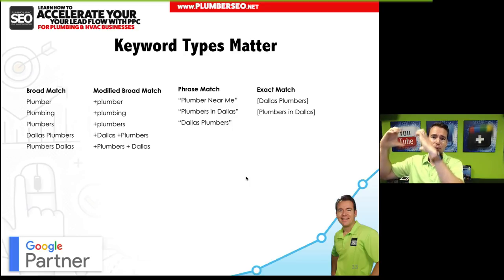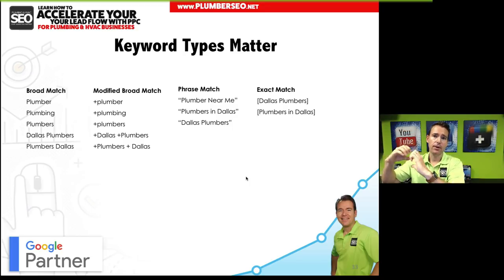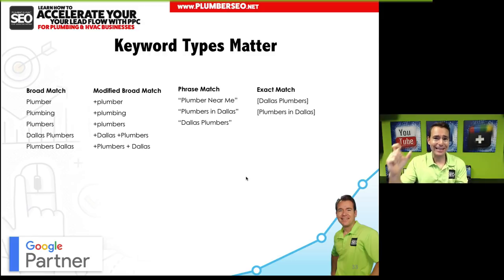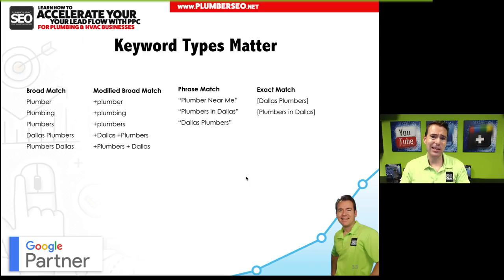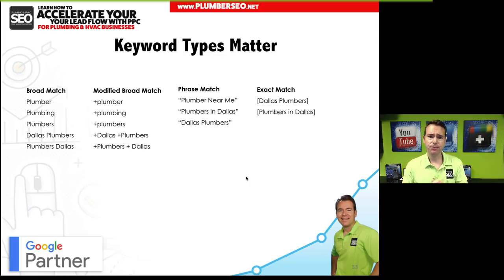If you're too restrictive — like only using exact match brackets for 'Dallas plumber' — you could miss out on a lot of keywords. You want a blend of phrase match and exact match with some modified broad match to capture the full range of relevant searches without wasting budget on irrelevant ones.